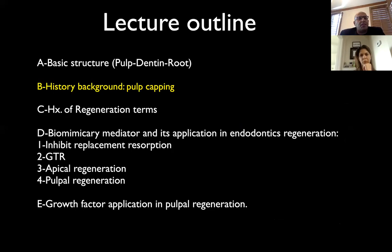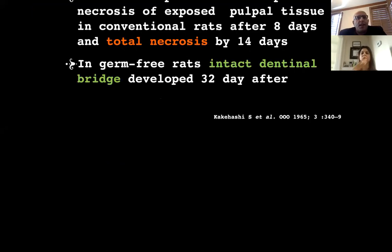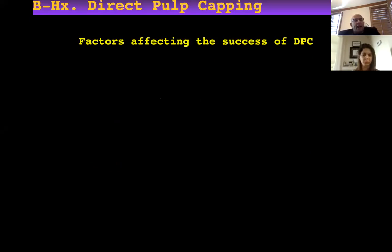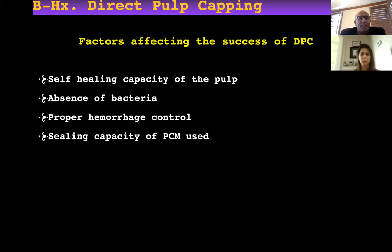Now let's go to the history background of pulp capping. From the famous study by Kakehashi, caries exposure is the main reason for pulpal infection — this is the classic and most cited paper in endodontics. Factors that affect direct pulp capping include: the defense capacity of the pulp, because it doesn't have collateral blood supply (unlike skin wounds which have significant adjacent blood supply); the absence of bacteria; proper hemorrhage control; and the sealing capacity of the pulp capping material, which was improved with MTA.